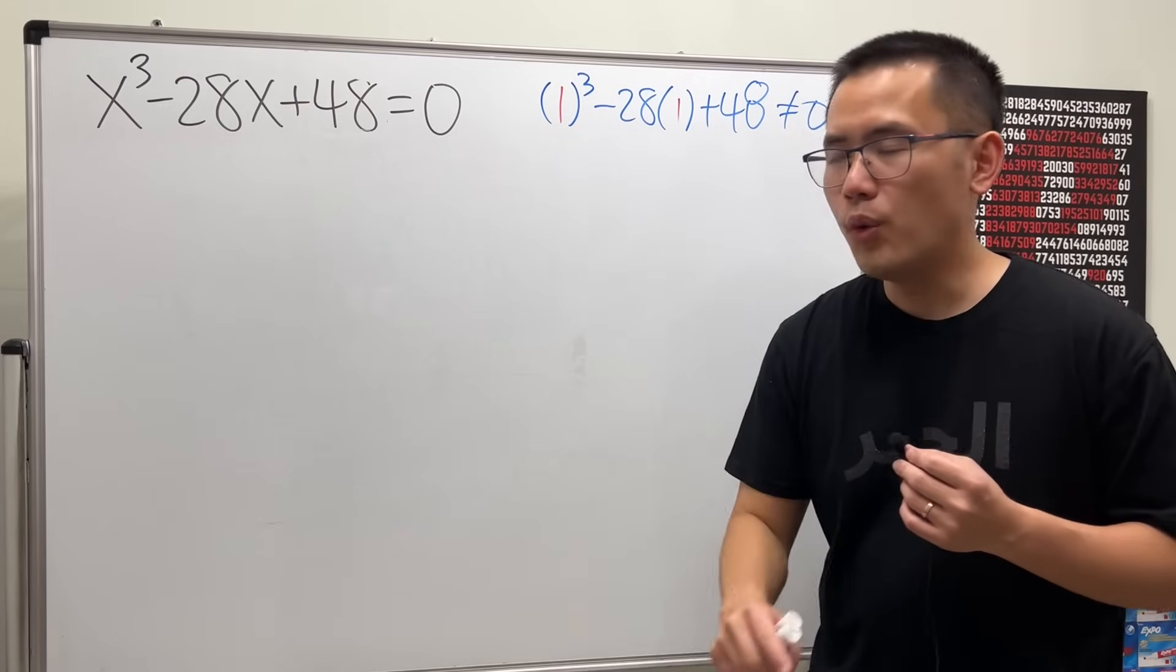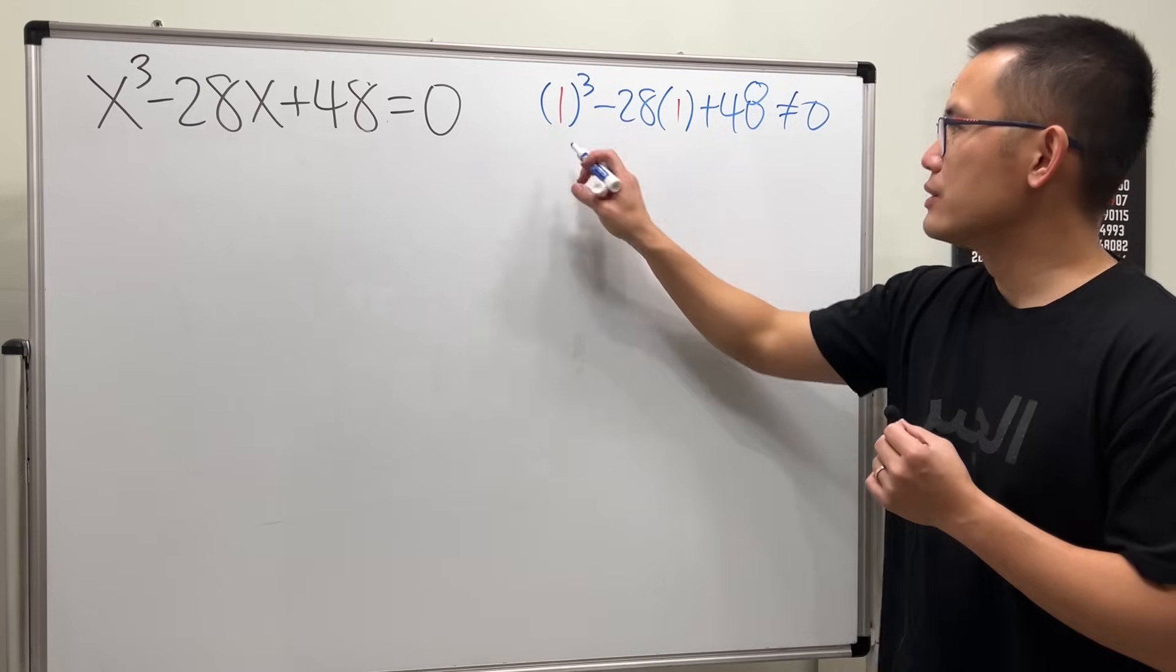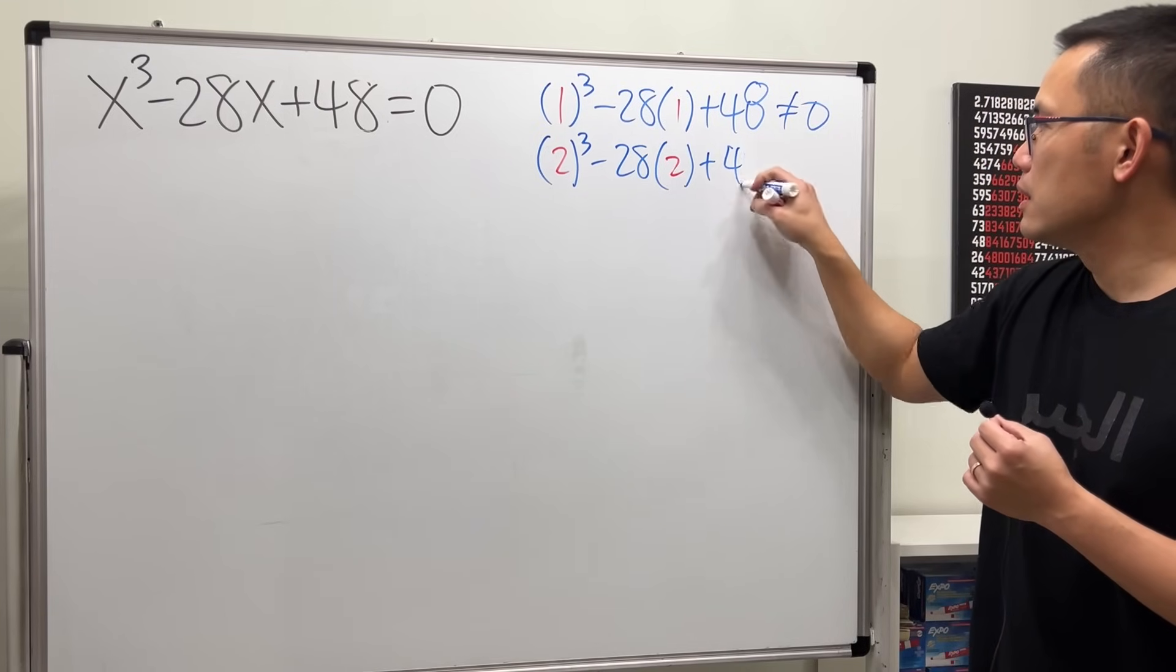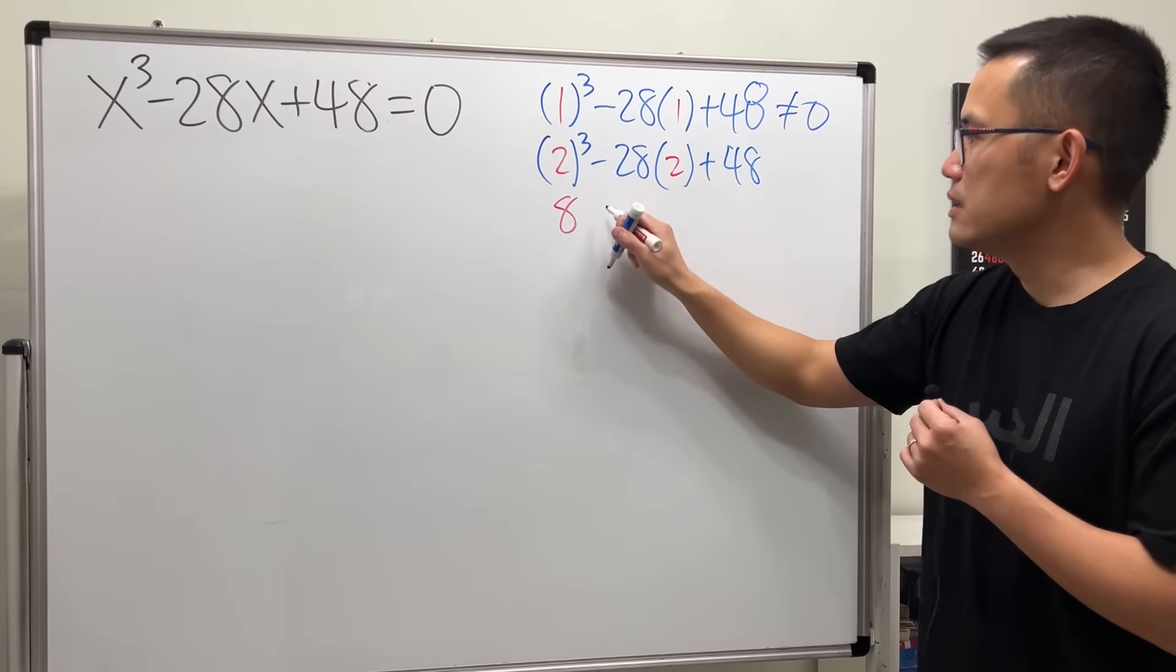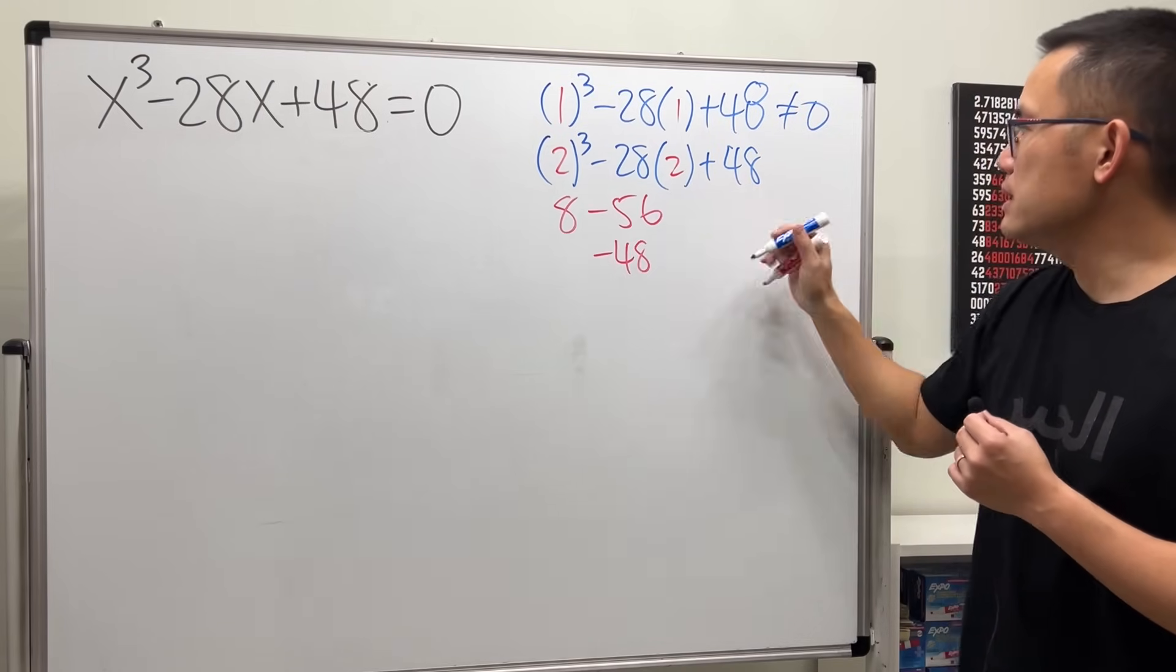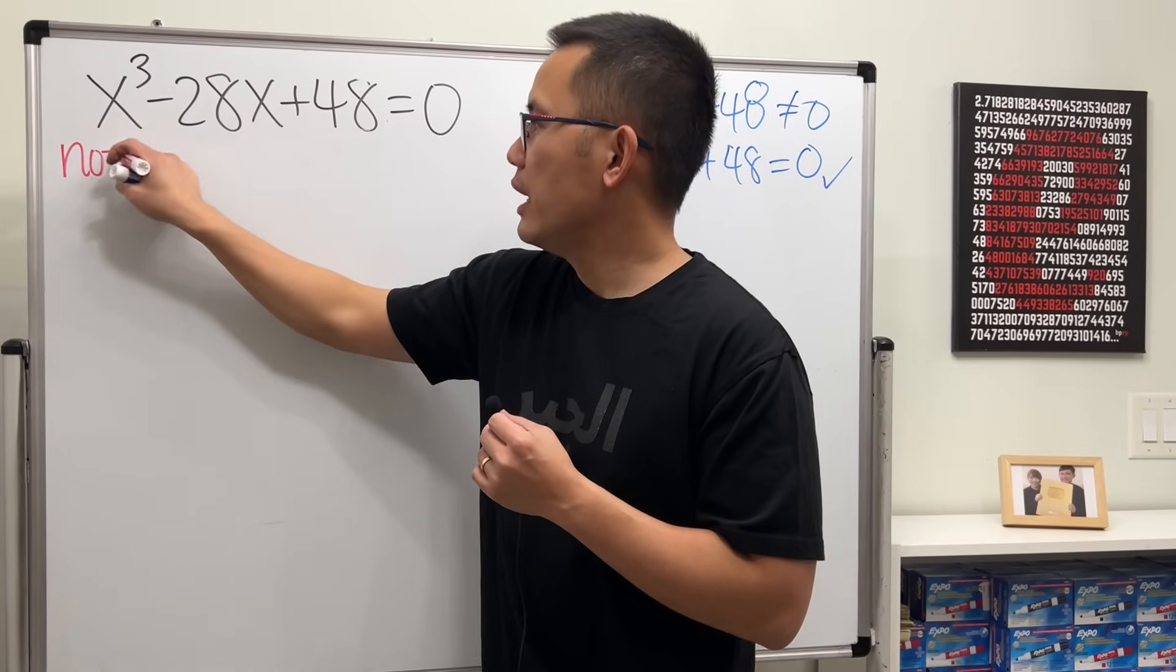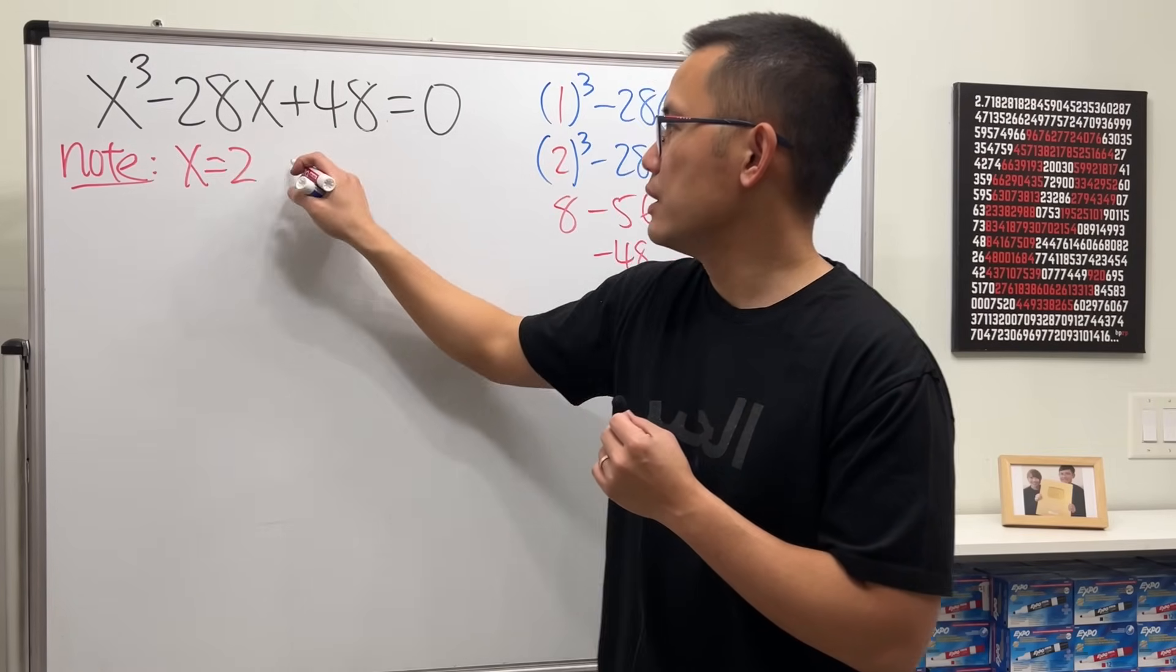Next, 2 times 24 will give us 48, so let me try 2. I'm going to plug in 2 into all the x's. Here we're in luck, because this is 8 and this is minus 56, that's negative 48, plus this 48 is indeed equal to zero.